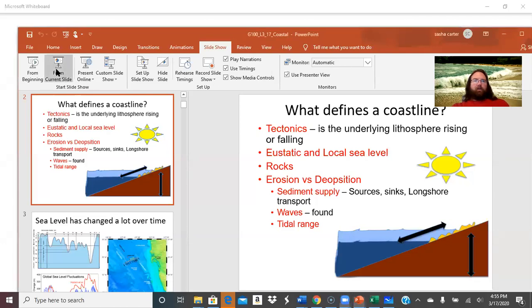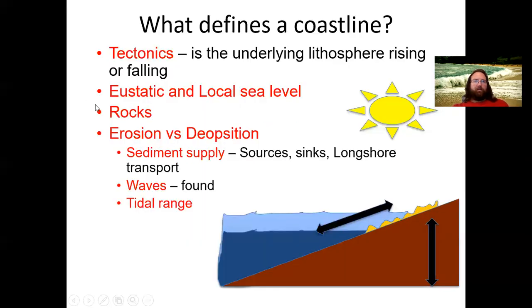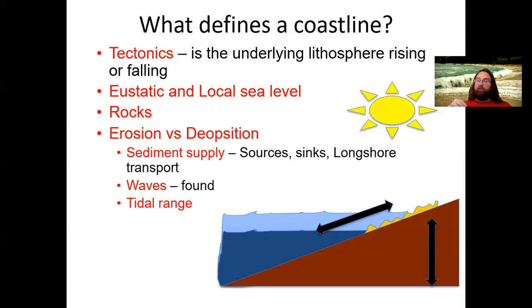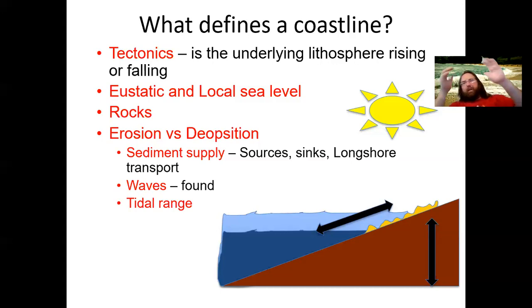We're going to start with coastal processes. First, we'll talk about what processes shape our coastline. The second part of this lecture — which will be the bulk of it — we'll go through the three major classes of coastline: those that are emerging, those dominated by sediment inputs, and those dominated by being swamped by waters overflowing them.